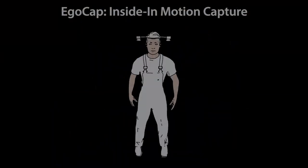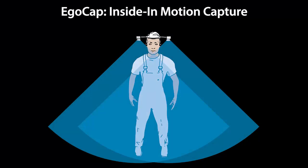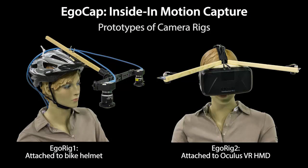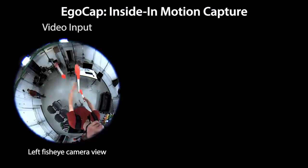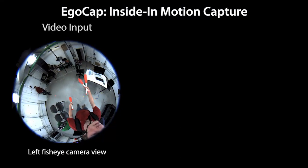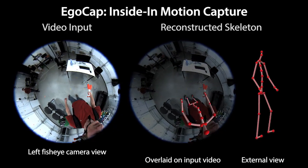Instead, we propose an approach for egocentric markerless motion capture using two head-mounted cameras with fisheye optics. Here we show two system prototypes mounted on a bike helmet and an Oculus virtual reality headset. Fisheye optics capture a large field of view even when mounted close to the body. This enables the reconstruction of full-body skeletal motion from just two cameras.